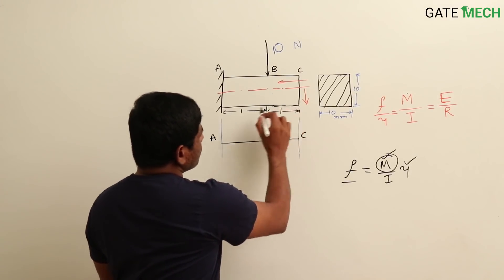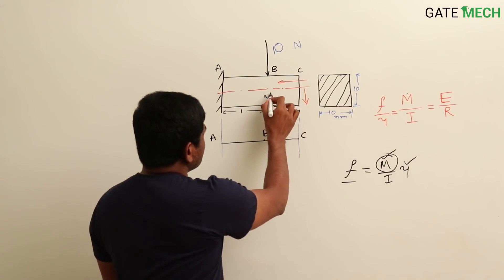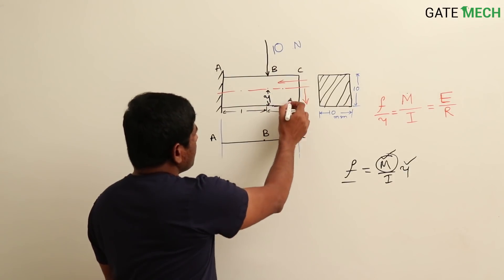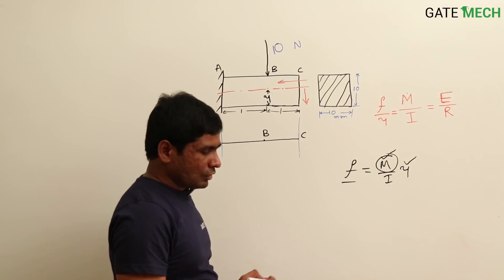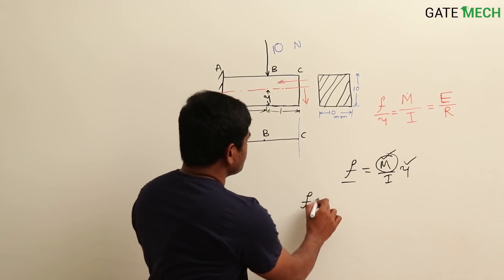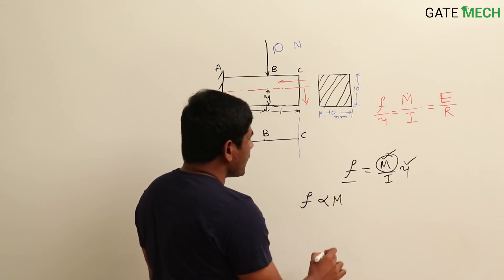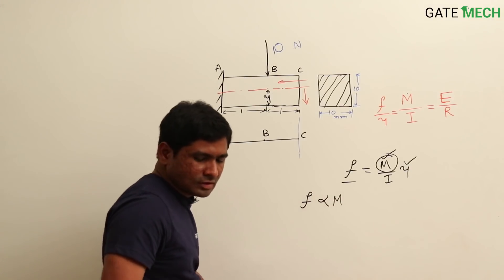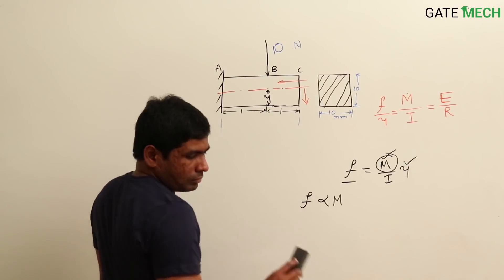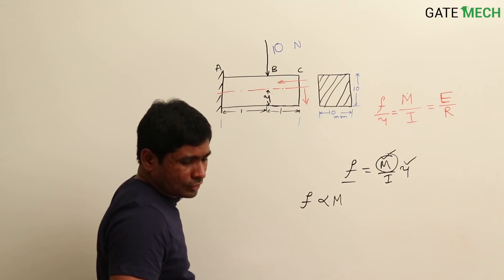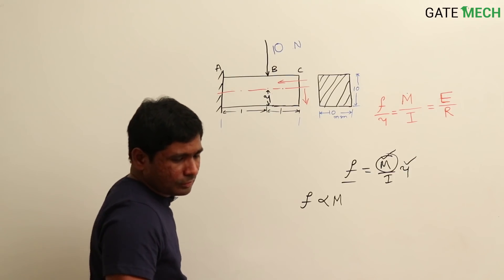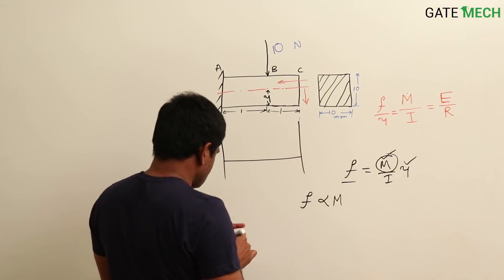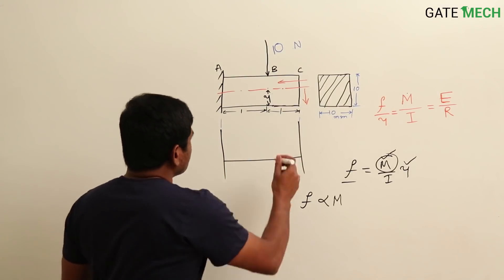We need to find the variation of bending stress at the bottom fibers, which means y is constant — y is the distance from the neutral axis to the bottom fiber. I is also constant, but M is changing. So F is proportional to M; whatever change occurs in M will be replicated in the bending stress. We need to find the change in moment along the length by drawing the bending moment diagram.